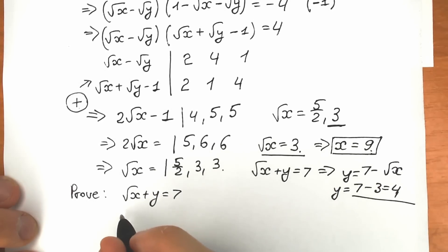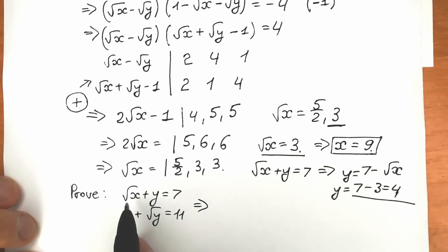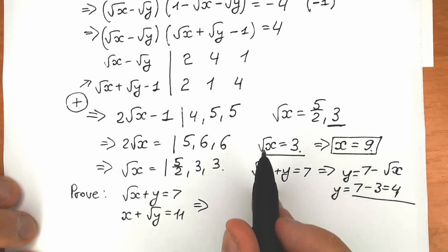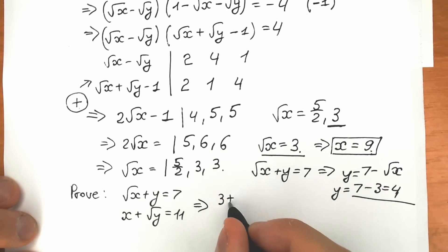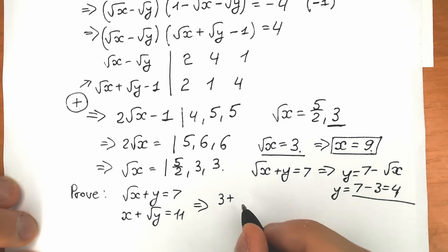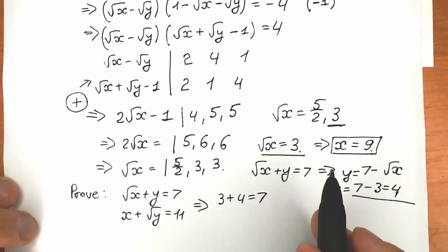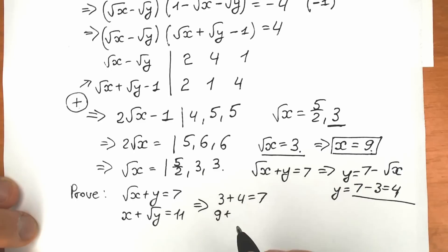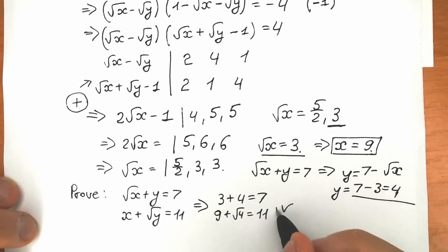Let's verify. First equation: square root of x plus y equals 7. With x equals 9 and y equals 4: square root of 9 plus 4 equals 3 plus 4 equals 7. Correct! Second equation: x plus square root of y equals 11. We have 9 plus square root of 4 equals 9 plus 2 equals 11. Absolutely correct!